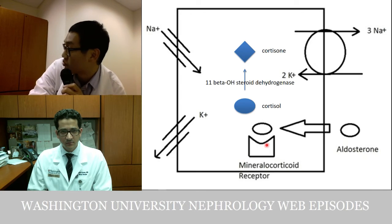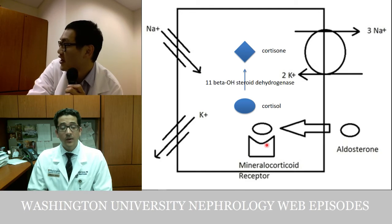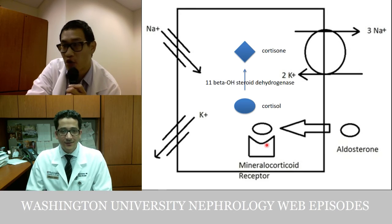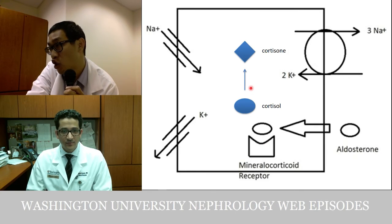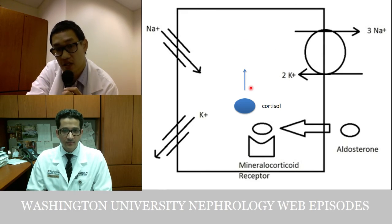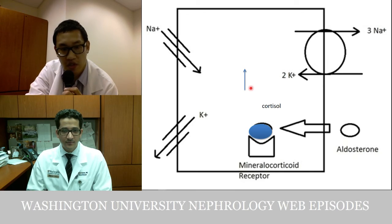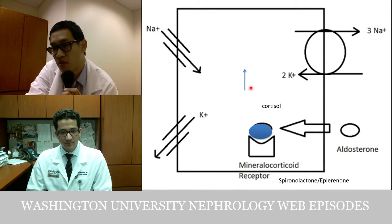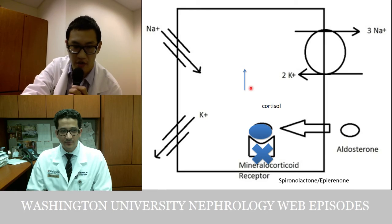Under states of enzyme deficiency — whether congenital, from cholestatic jaundice, or from eating European black licorice containing glycyrrhizinic acid — cortisol is no longer degraded to cortisone, accumulates in the cell, and binds the mineralocorticoid receptor, causing apparent mineralocorticoid excess. Treatment involves addressing the underlying cause — stopping licorice, treating the cholestasis — or using spironolactone to block the mineralocorticoid receptor.